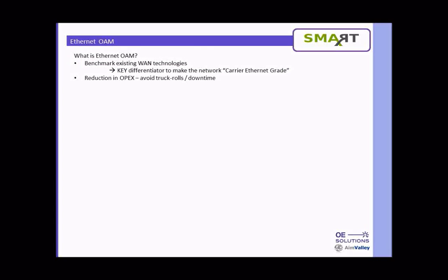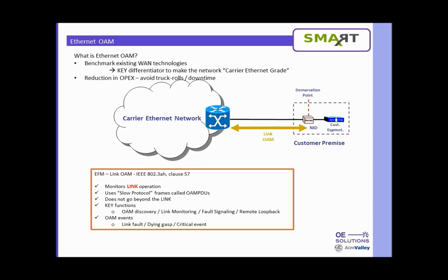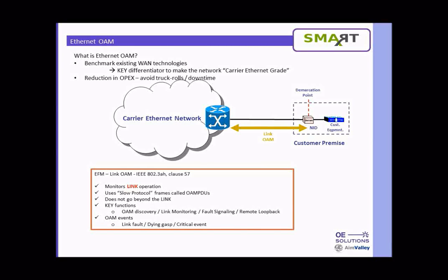So what is Ethernet OAM? It benchmarks existing OAM technologies, and the Ethernet OAM feature is a key differentiator to make the network carrier Ethernet grade. Two versions are being introduced in March 2012. The first one is EFM — it is a Link OAM based on IEEE 802.3AH, and it monitors the link operation. It uses slow protocol frames called OAM PDUs, and it stays within the link; it does not go beyond the link.